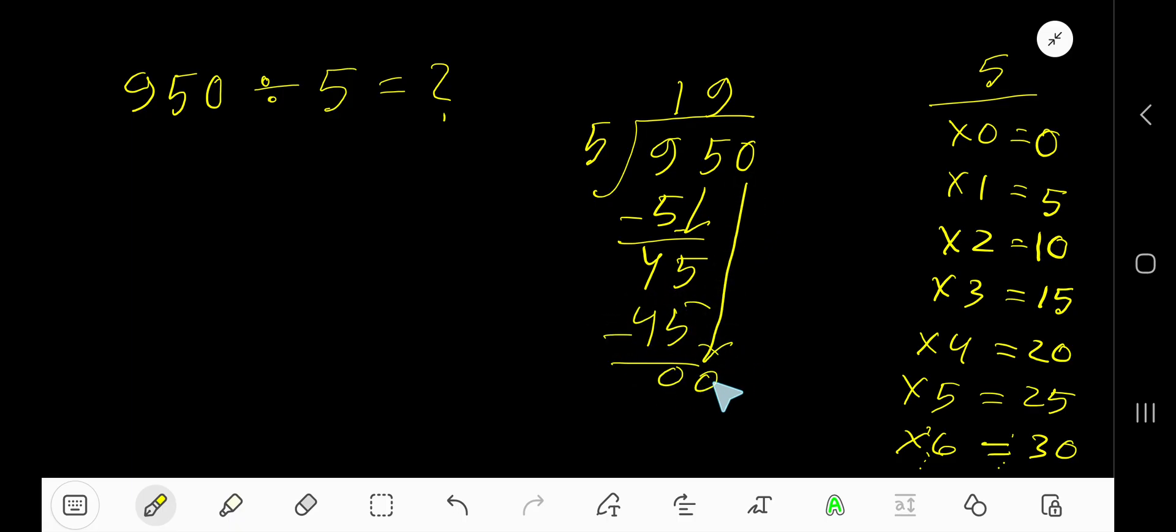Bring down this 0. 0 means 0. 5 goes into 0 how many times? 0 times. 0 times 5, 0. Subtract 0.